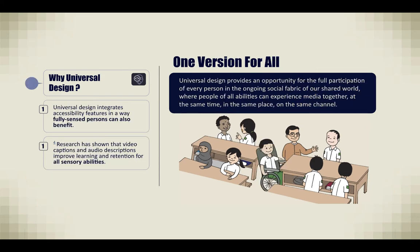Why universal design? One version for all. Universal design integrates accessibility features in a way fully sensed persons can also benefit. Research has shown that video captions and audio descriptions improve learning and retention for all sensory abilities. Universal design provides an opportunity for the full participation of every person in the ongoing social fabric of our shared world, where people of all abilities can experience the media together, at the same time, in the same place, on the same channel.